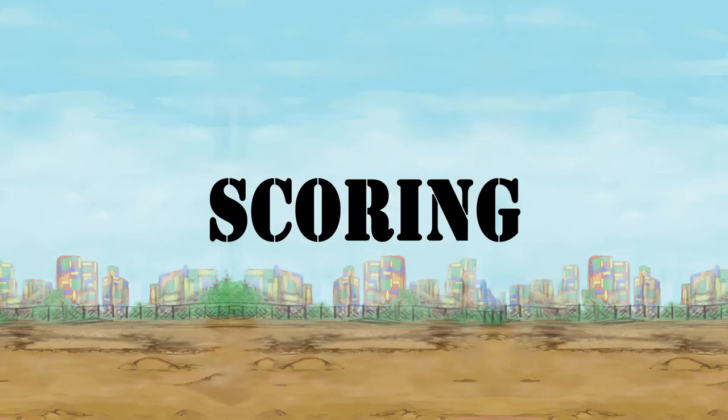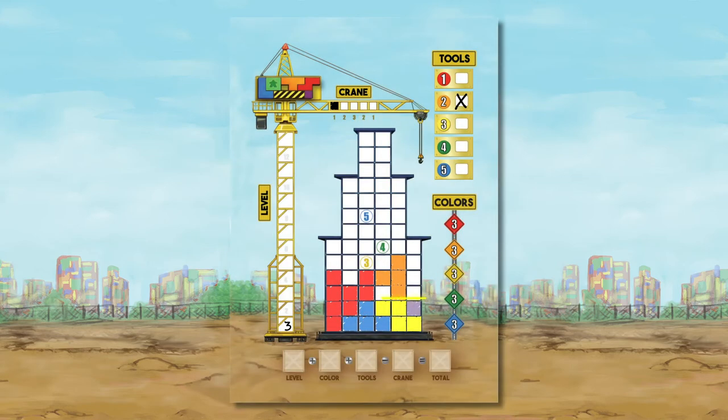Once all players have done their placement for the turn, scoring takes place in phase four. Any player completing a level will score it for the number of different colors it has. If it has four different colors, then write the score in the box of the same level of the crane with a four. If you or any other player manages to be the first to fill in a level, all of you who did get to fill in the small triangle worth one point at the end of the game.